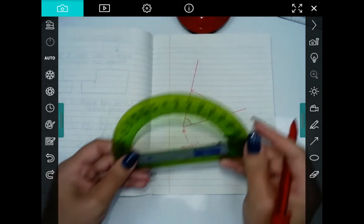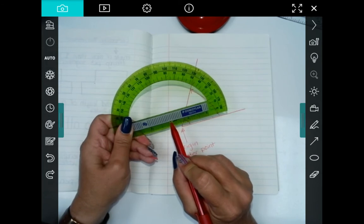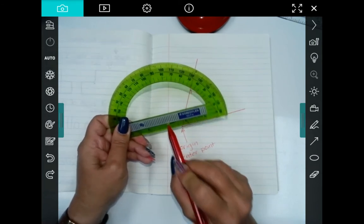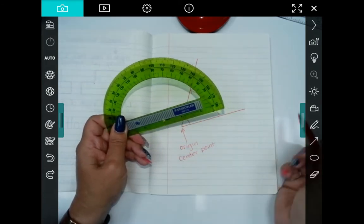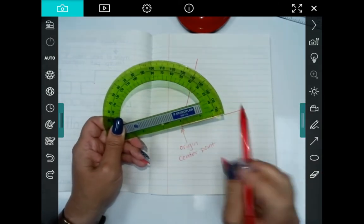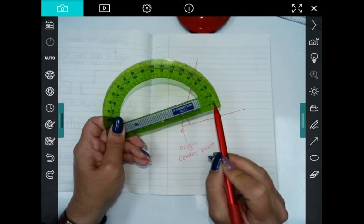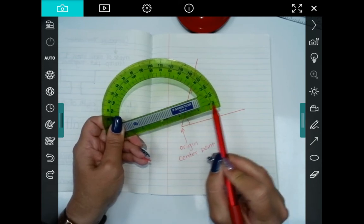All right. So one thing that you need to have is the center dot. Make sure that you always locate that. Okay. The second part that you need to know about a protractor is that straight out from the second part, there are two numbers.